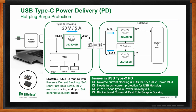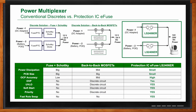Protection ICs also stack up well against discrete solutions for power supply o-ring applications, where one application may be powered from a DC source and another from a battery or PoE power supply. A discrete solution would typically include some type of overcurrent protection such as a fuse or PTC, plus a Schottky diode. With a single protection IC, you get overcurrent protection, overvoltage protection, and reverse current blocking for o-ring power applications all in one device.